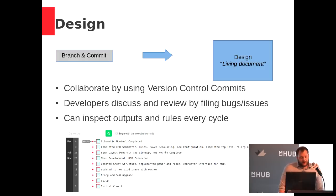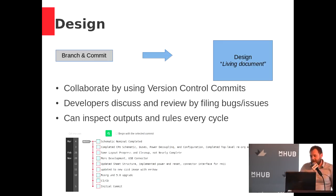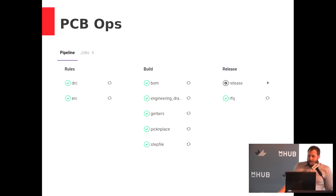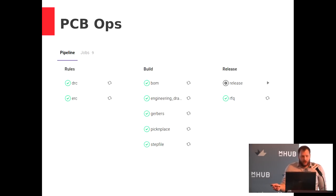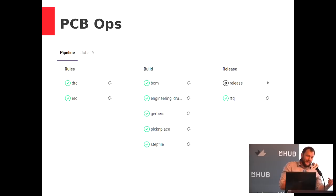Developers generating design files create commits on the history of that file. Commits have log messages, and you can comment on each one. Going back to our sample pipeline, every commit has all of these things generated — Gerbers, drawings, rules results. A reviewer can look back and see exactly what each commit's outputs looked like, including where rules failed or started to pass. This becomes very important when you look back a year later.